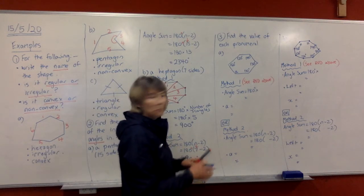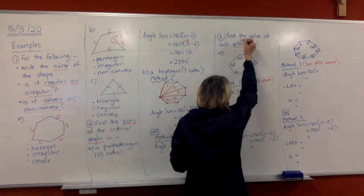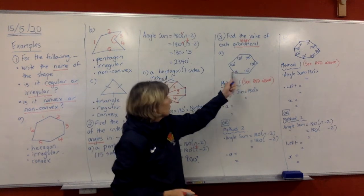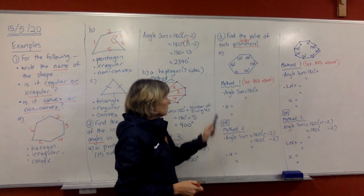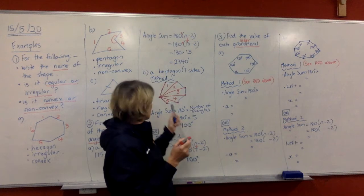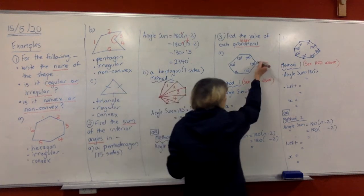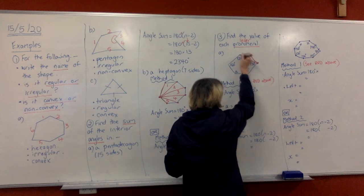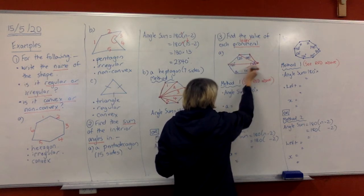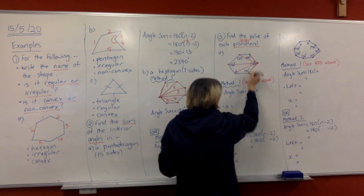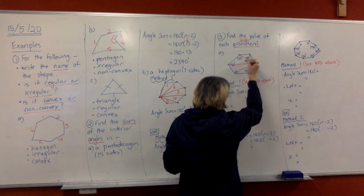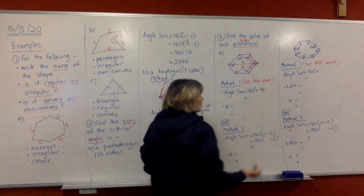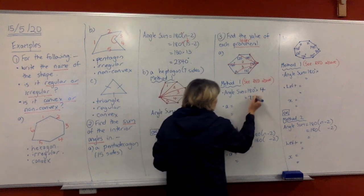All right. So over here we're finding the value of each pronumeral or letter. So the first thing you need to do is we need to have the angle sum of this shape to be able to find this value for A. So we're going to do method 1. So with your red pen, we're going to draw in our lines like we just did over here. I'm going to start over here because you can start anywhere you like, and I'm going to join it to every other corner. Okay. Now if you count the triangles inside there, there are four triangles.